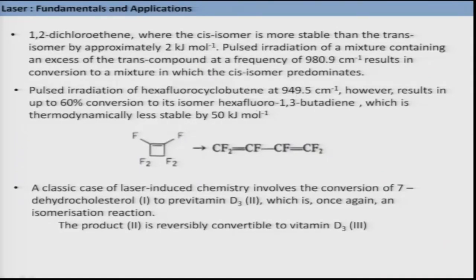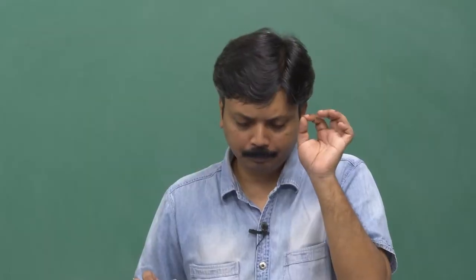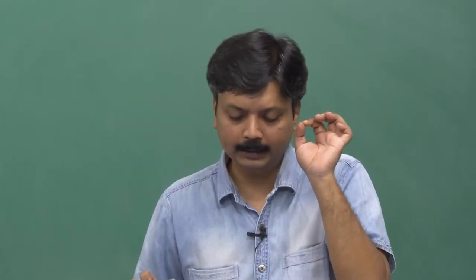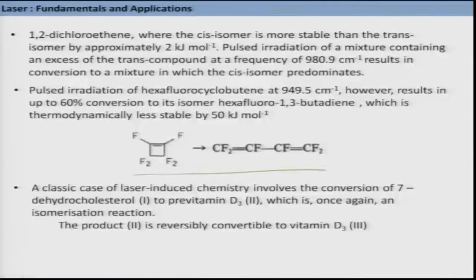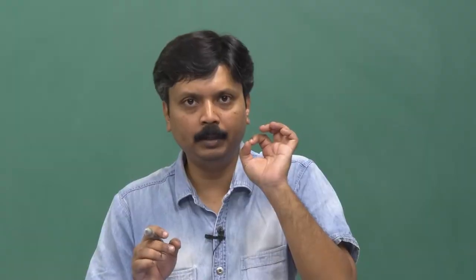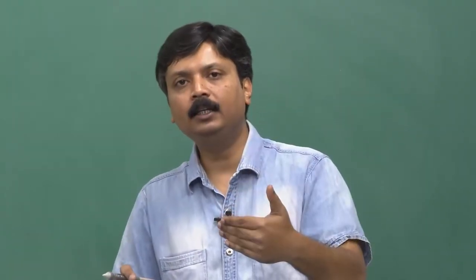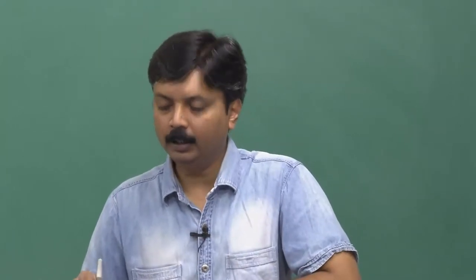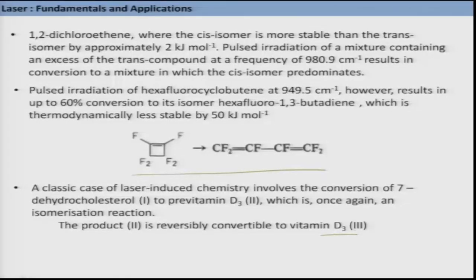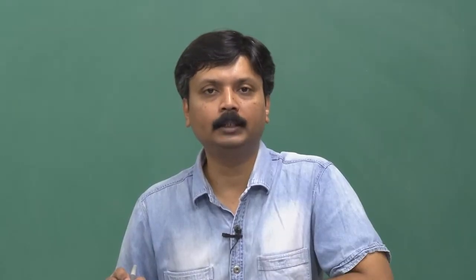For example, irradiating a mixture of cis and trans 1,2-dichloroethene with 980.9 cm⁻¹ laser light in the infrared converts it predominantly to the cis isomer. The pulsed irradiation of hexafluorocyclobutene at 949.5 cm⁻¹ results in up to 60 percent conversion to its isomer hexafluoro-1,3-butadiene, which is thermodynamically less stable by 50 kilojoule per mole. We will stop today by stating one classic case: the conversion of 7-dehydrocholesterol to pre-vitamin D3, which is an isomerization reaction, and once converted to pre-vitamin D3 it can easily become vitamin D3, which is very useful for our body.